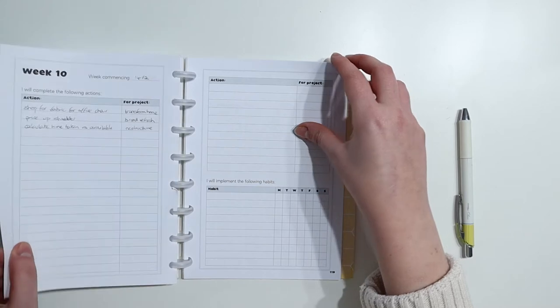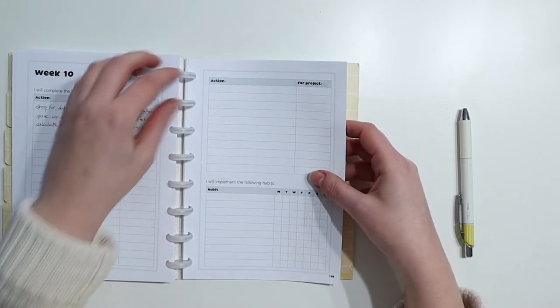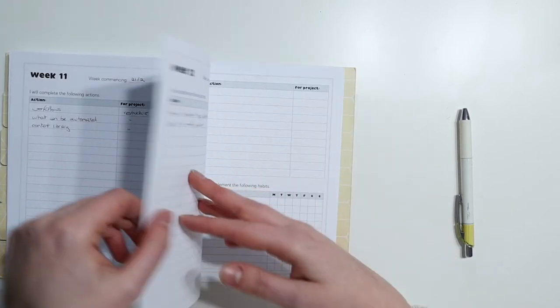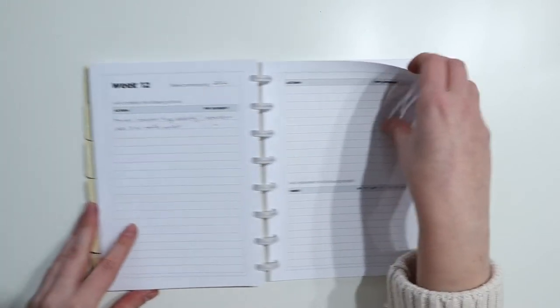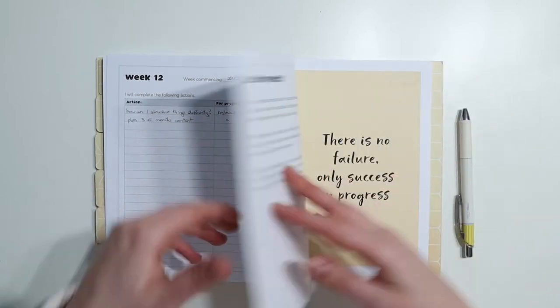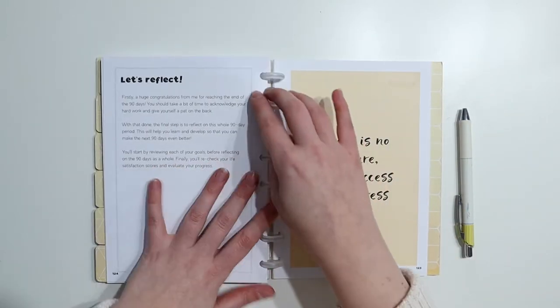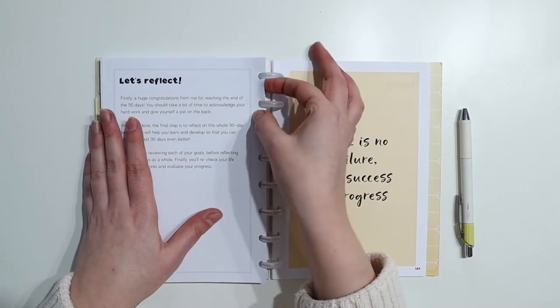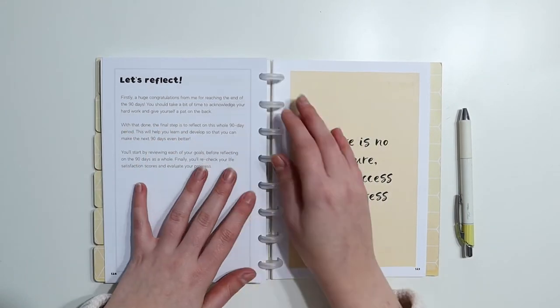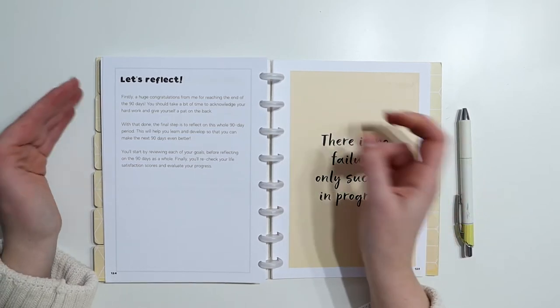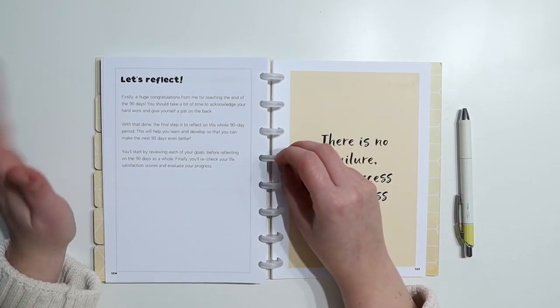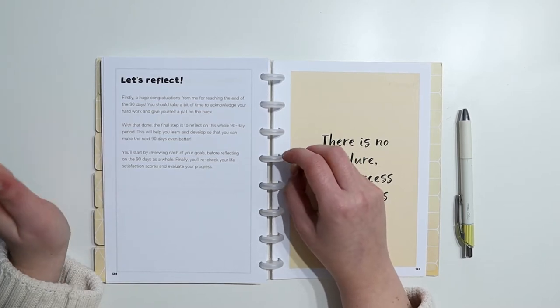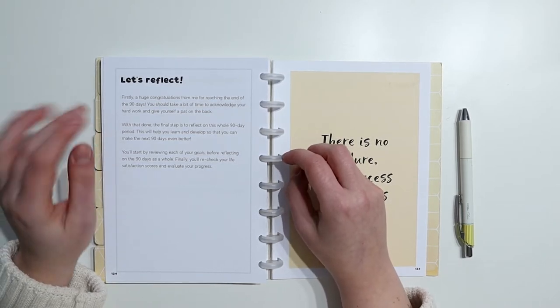And then I had my weekly plans of what I would be completing over the last four week period. So we are at the end of that now. I can tell you for a fact that I know I haven't achieved everything in these plans because I'm a human being. So I'm going to do an honest reflection on it and I'll show you where we ended up. So the page says, let's reflect. Firstly, a huge congratulations from me for reaching the end of the 90 days. You should take a bit of time to acknowledge your hard work and give yourself a pat on the back.